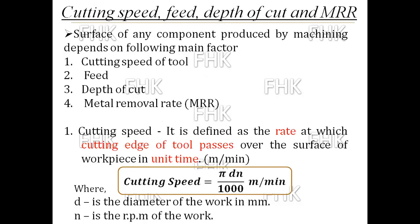The surface of any component produced by machining depends on the following main factors: cutting speed of tool, feed, depth of cut, and metal removal rate. Cutting speed is defined as the rate at which the cutting edge of the tool passes over the surface of the workpiece in unit time. It is measured in meters per minute, and mathematically the formula for cutting speed is: V = π·d·n / 1000 meters per minute.